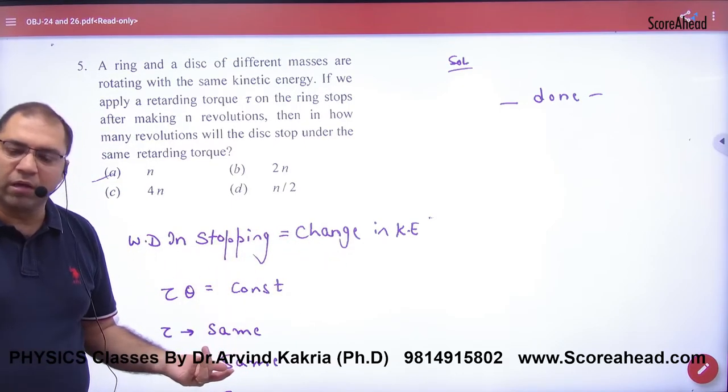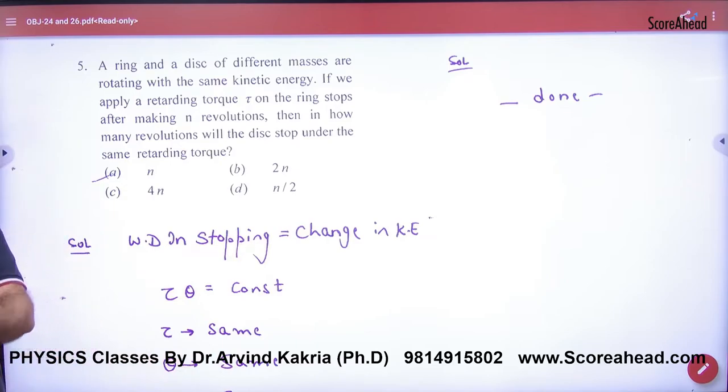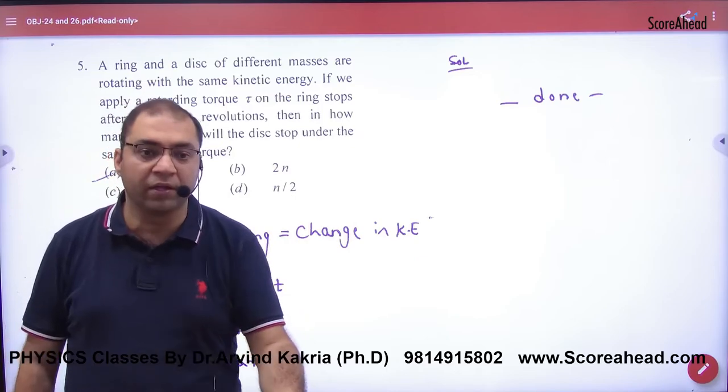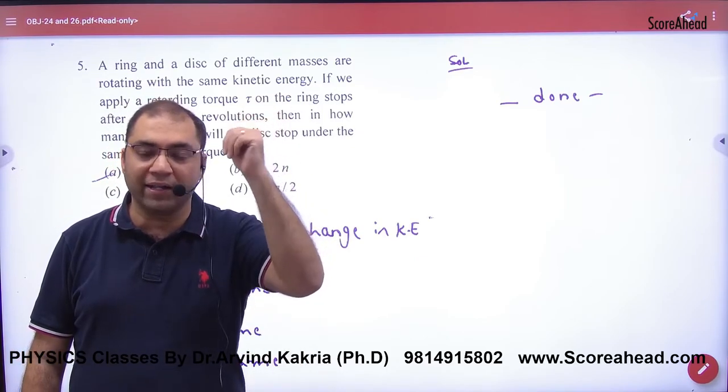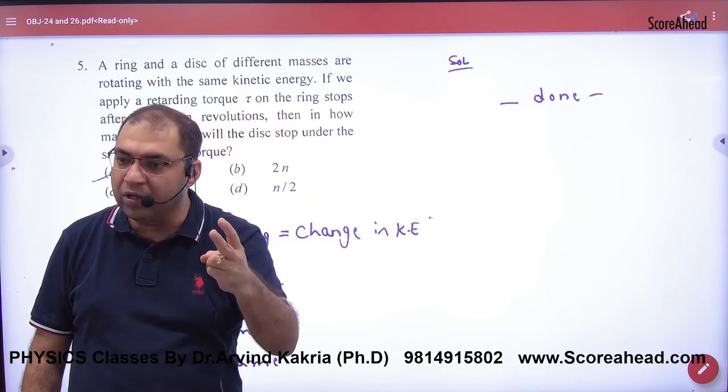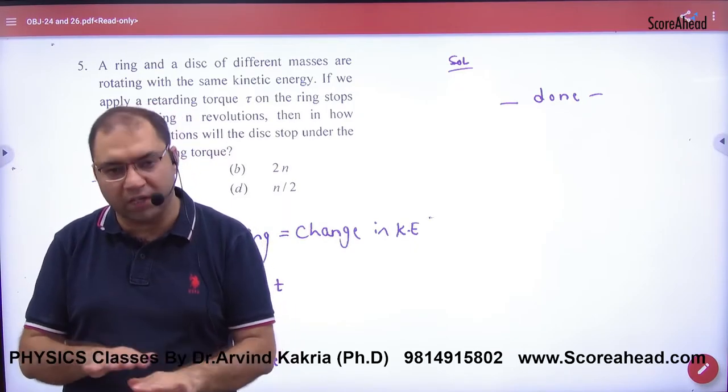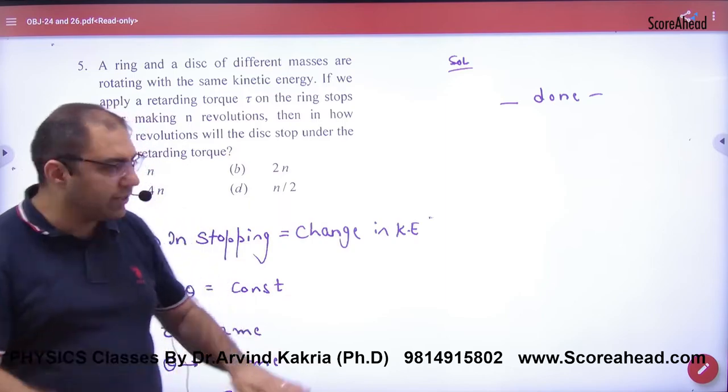Change in kinetic energy is always equal to amount of work done. In this case, it is the same. We will do the amount of work done for the body to stop. And what will be the change in kinetic energy? Change in kinetic energy is the same. Because the question is given that the kinetic energy is the same. And the final energy is zero. So the change is the same.